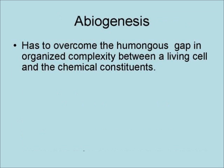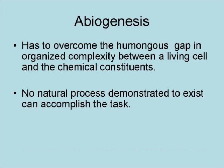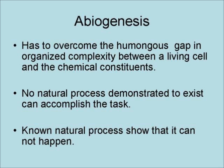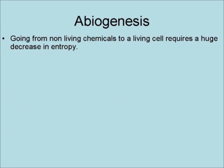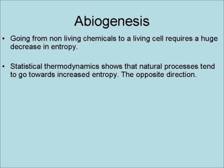Abiogenesis has to overcome the humongous gap in organized complexity between a living cell and its chemical constituents, and no natural process demonstrated to exist can accomplish this task. In fact, known natural processes show that it cannot happen. Going from non-living chemicals to a living cell requires a huge decrease in entropy. Statistical thermodynamics shows that natural processes tend to go towards increased entropy, and that's the opposite direction of what is needed for abiogenesis.